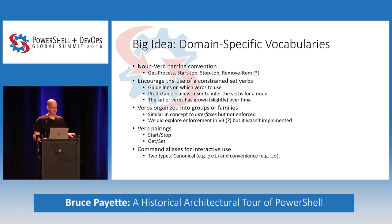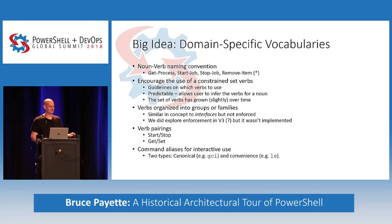We had verb pairings — start/stop, get/set — again prescriptive so that the user could infer that if there's a 'start' verb, there's probably a 'stop' verb. There are two types of aliases: canonical aliases like GCI for Get-ChildItem, which are specific to PowerShell, and convenience aliases like 'ls' or 'dir'. This worked well in Windows, but got us into trouble when we moved to macOS and Linux because we were hiding some existing commands on those platforms — especially curl, which was a big problem.